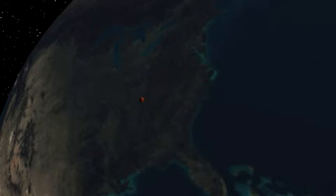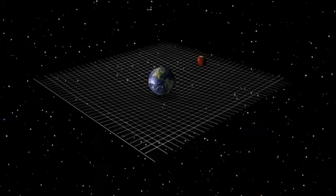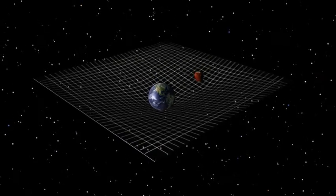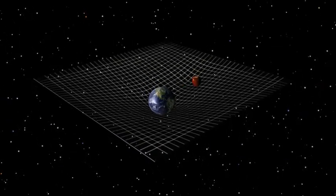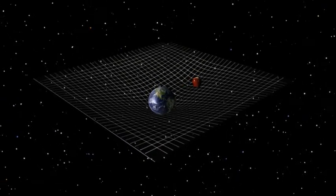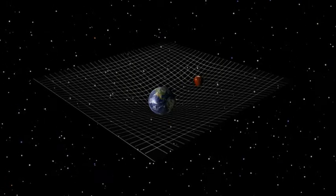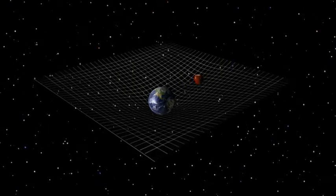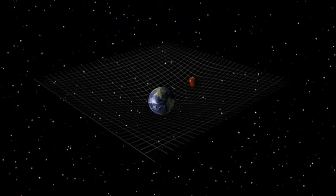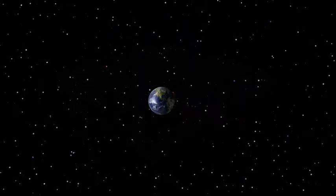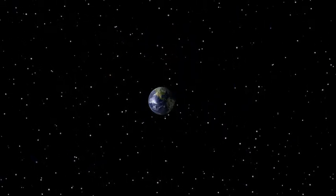So Einstein did away with the idea of an invisible force altogether. There's no mysterious force pulling the apple towards the Earth. Rather, the presence of Earth in space causes a curvature of the surrounding space-time. And the apple simply follows the most natural path available to it as it moves through this curved space. In this case, a path that causes it to move towards the Earth.